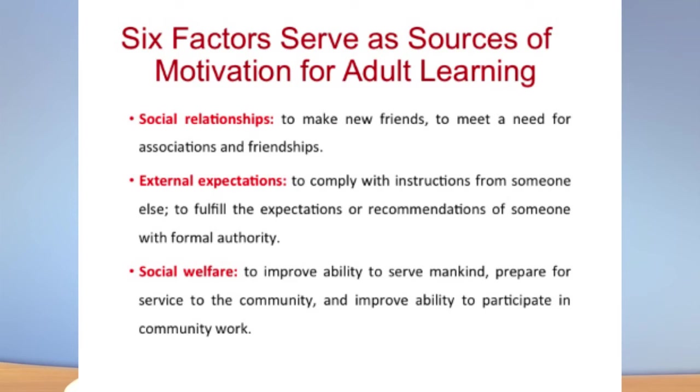First, social relationships: to make new friends, to meet a need for association or friendships. When adult learners come to the class or institution, they want to make new friends, know something new, and become part of some association. If they find all of these in the classroom or institution, they will be motivated.